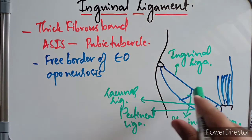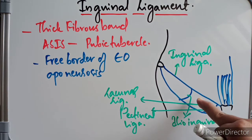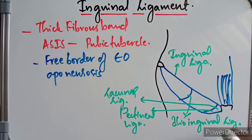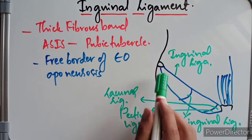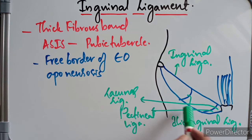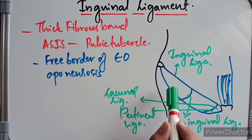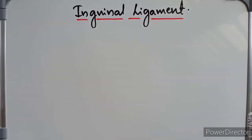The inguinal ligament has extensions called the ilioinguinal ligament, the pectineal ligament, and the lacunar ligament. These three ligaments are the extensions of the inguinal ligament attached to the iliopubic tract. Just between the inguinal ligament and the iliopubic tract is the sub-inguinal space.